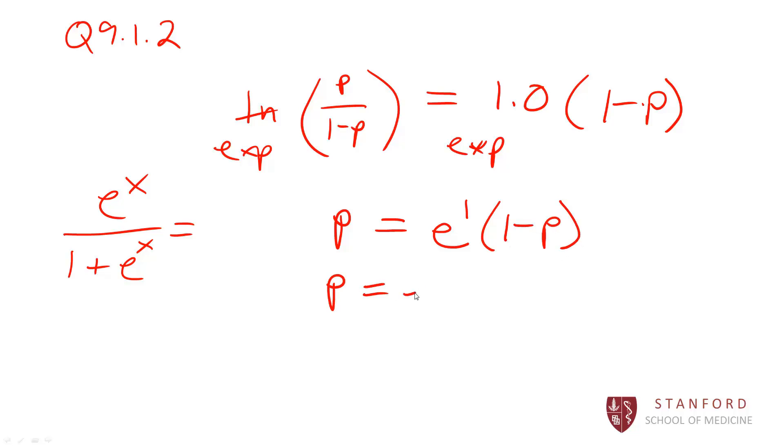So we would get that p is equal to e raised to 1 times 1 minus p in this case. So p is equal to e, minus e times p. And again, e raised to 1. I should carry that over.